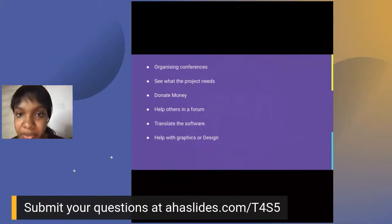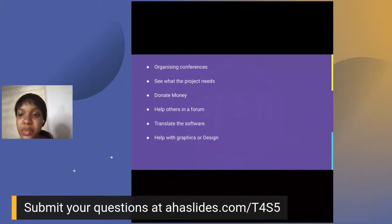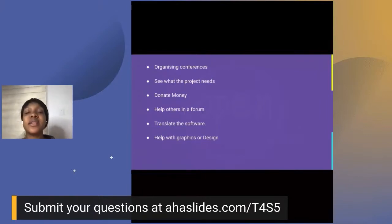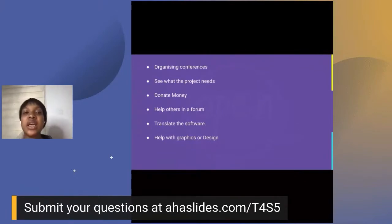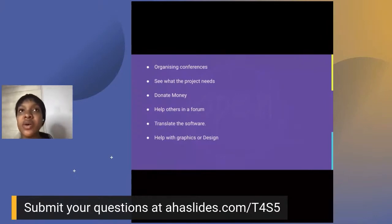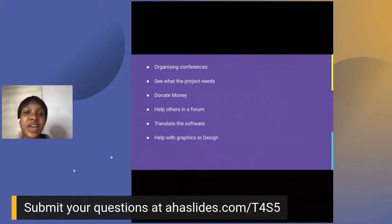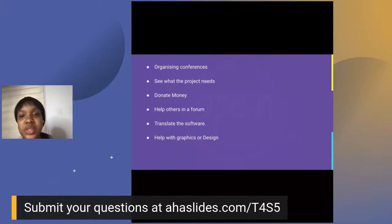Another way is by seeing what the project needs. When you are using a project, you'll be able to see what could be improved. For example, some people use Mautic for marketing automation and email marketing, and while using it they notice areas where Mautic is lagging. They give their feedback to Mautic, and Mautic works on that. They've already contributed to open source — they didn't write code, but their feedback will make the experience of using Mautic software much better for everyone.